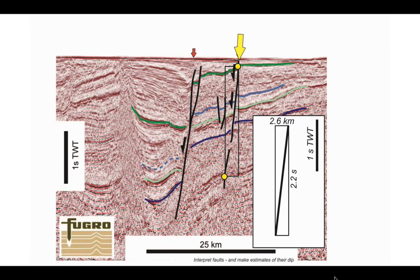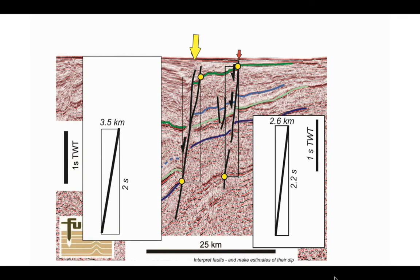We can do the same for the left-hand fault here, where we've traced for a depth distance of 2 seconds two-way time, and it achieves that depth difference over a horizontal distance of 3.5 kilometres.